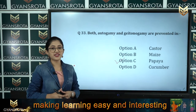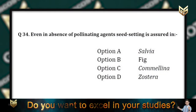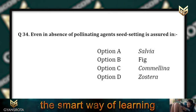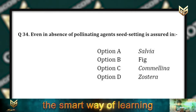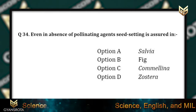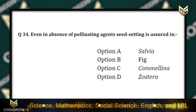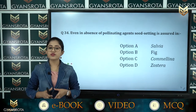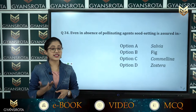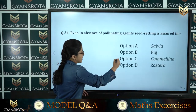Question 34: Even in the absence of pollinating agents, seed setting is assured in option A: Salvia, option B: Fig, option C: Camelina, option D: Zostera. This is from Sexual Reproduction in Flowering Plants. The correct answer is option C, Camelina.